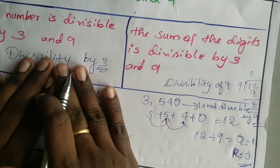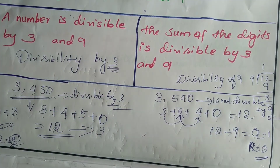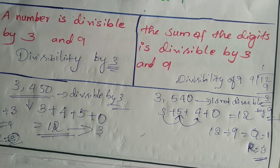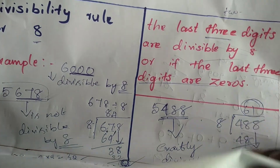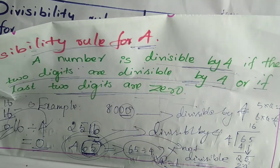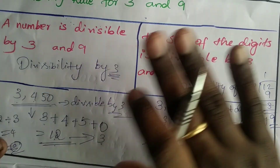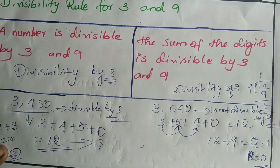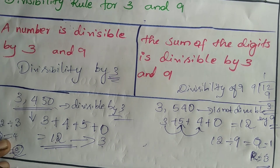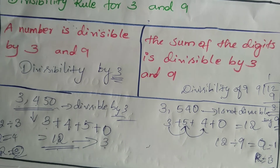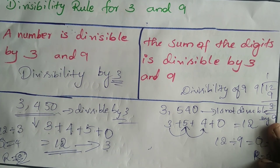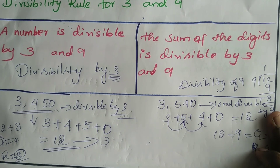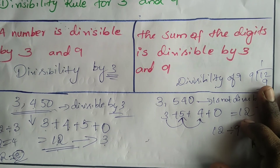For 3 and 9, it is very simple — just add the given digits and check if the sum is divisible by 3 or 9. Today we have seen: divisibility rule for 4, 8 (which are similar to each other), and 3 and 9 (which are also similar). Please go through the textbook examples, recall everything, and memorize your multiplication tables. We'll meet in the next session. Take care, bye-bye.